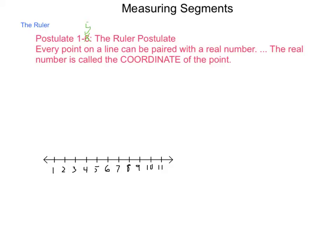Postulate 1-5 is called the ruler postulate, and it states every point on a line can be paired with a real number. This makes a one-to-one correspondence between the points on line and the real numbers. The real number that corresponds to a point is called the coordinate of that point. And you've used coordinate before when talking about graphing in algebra, so here's another use for that.